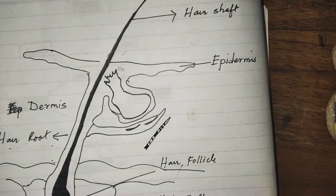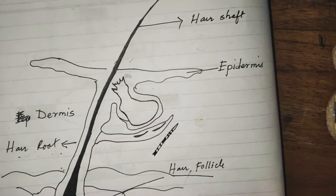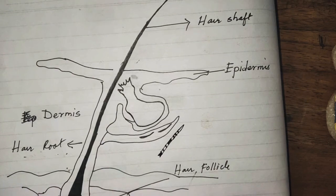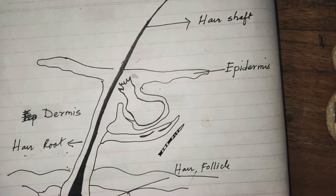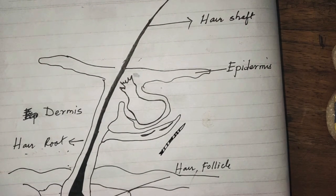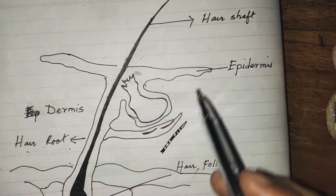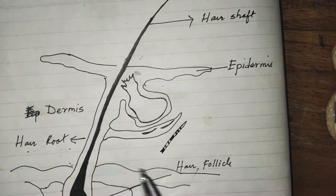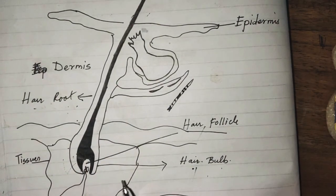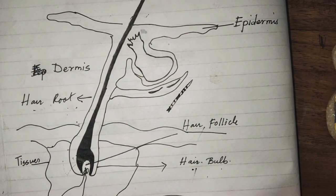So that is all we are going to learn today about one of the very important skin derivatives — hair. It is divided into three parts: hair shaft, hair root, and hair bulb.